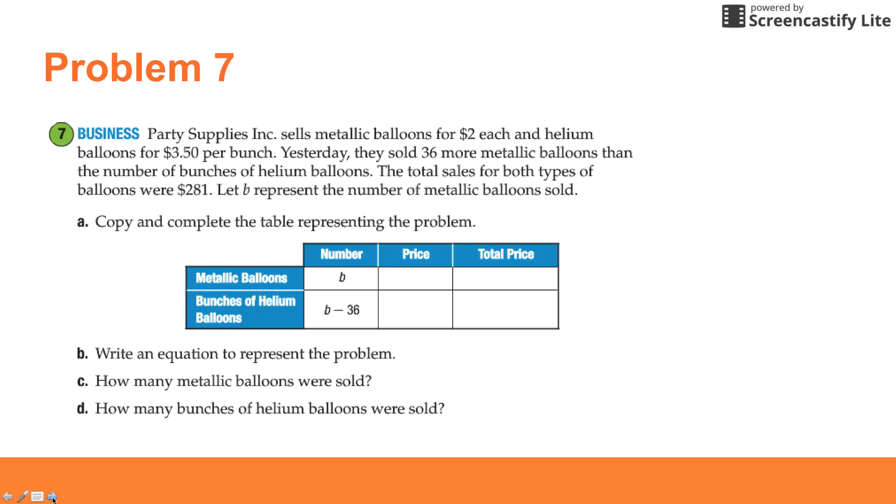In problem 7, it says Party Supplies Inc sells metallic balloons for $2 each and helium balloons for $3.50 per bunch. Yesterday they sold 36 more metallic balloons than the number of bunches of helium balloons. The total sales for both types of balloons were $281. Let B represent the number of metallic balloons sold. They're telling you right here that B is the number of metallic balloons sold. They also told you that they sold 36 more metallic balloons than helium balloons, so we would take the metallic balloons and subtract 36 to get the number of helium balloons.